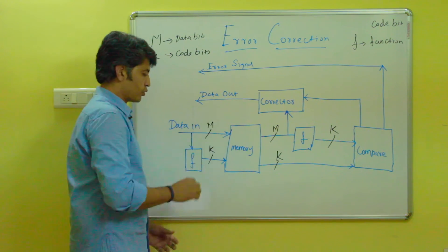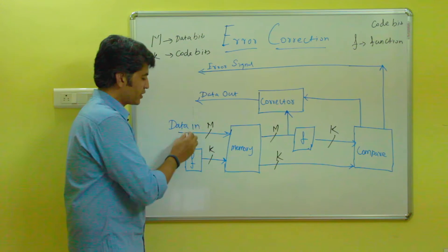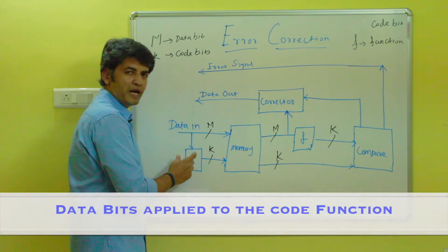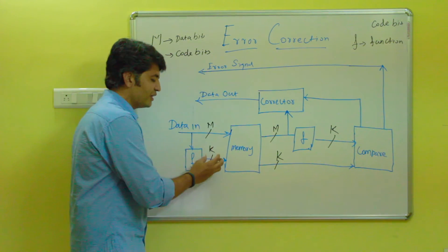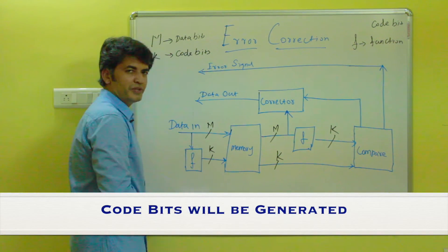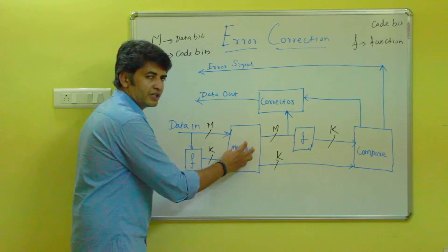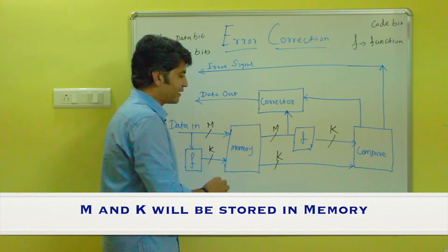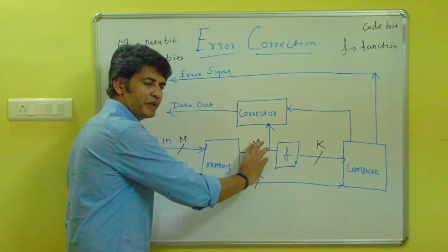Before storing, the data bit m is also applied to the code function f, which generates the code bit k. So both m and k will be stored in the memory location.